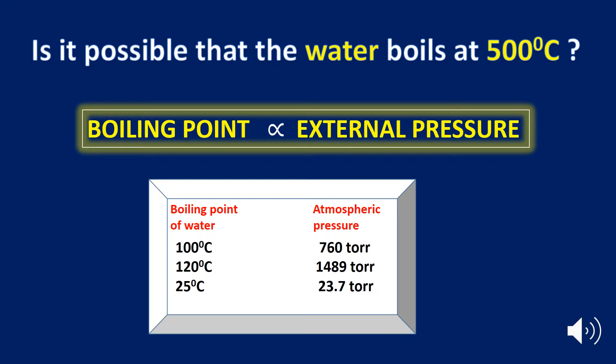As you can see here, 120 degree Celsius is the boiling point of water at an atmospheric pressure of 1489 torr, and with the decrease of the atmospheric pressure, the boiling point decreases.